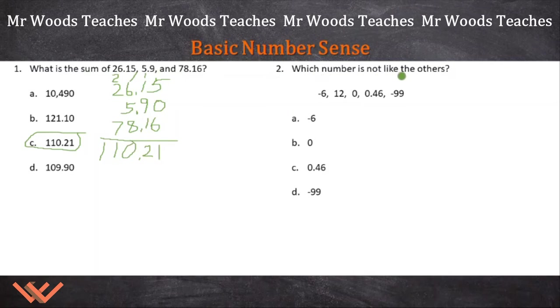Number 2. Which number is not like the others? Let's look at these numbers. We have negative 6, 12, 0, 0.46 and negative 99. This means we have to look at these, evaluate these numbers and what they are. Are these natural numbers? Well, 12 is. Are they whole numbers? Well, 0 and 12 are. Are they integers? Negative 6 is an integer, 12 is an integer, 0 is an integer. That's not an integer. And negative 99 is an integer. So it must be 0.46. That academic vocabulary that I need to understand helped me out with this.